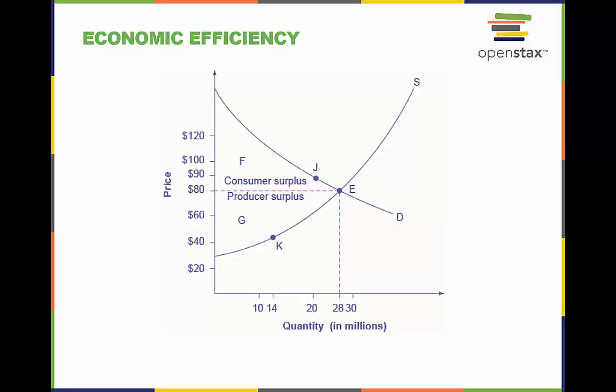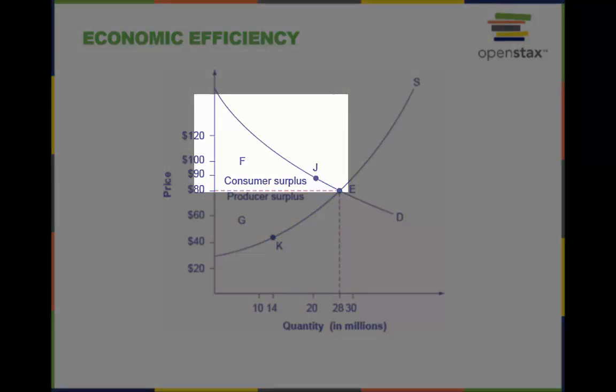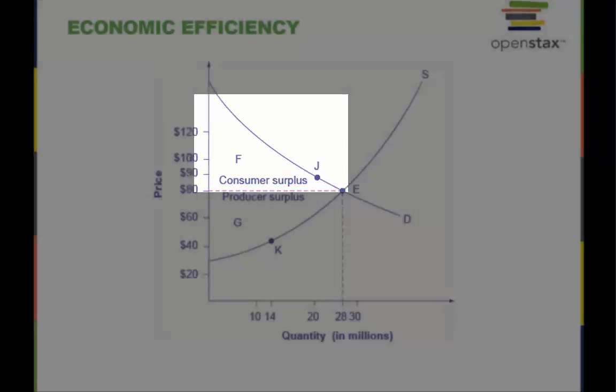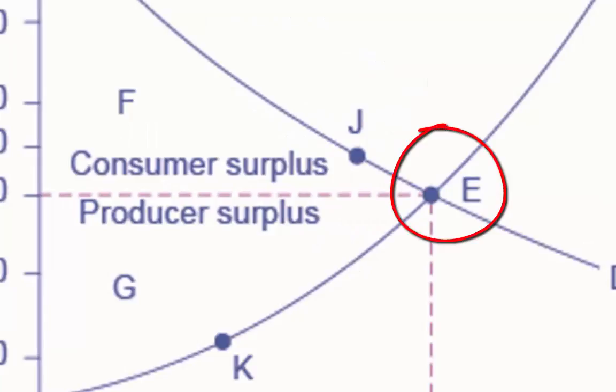The supply and demand models show us how efficient a market can be. There are benefits or surpluses to be realized by both consumers and producers. The somewhat triangular area labeled by F shows the area of consumer surplus, which shows that the equilibrium price in the market was less than what many of the consumers were willing to pay.